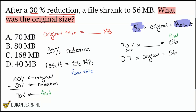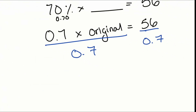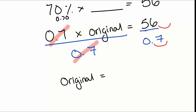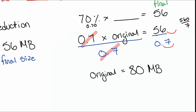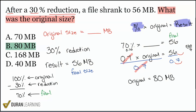Now all I have to do is divide both sides by 0.7. We cancel on the left side. For the original value, use the decimal rule — move the decimal right once on both numbers — giving us 560 divided by 7. That's 8 with a zero at the end: 80. So the original file size is 80 megabytes.